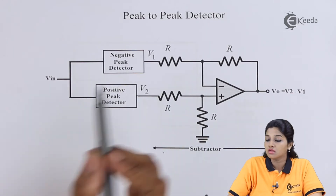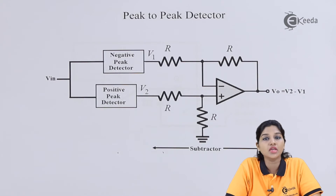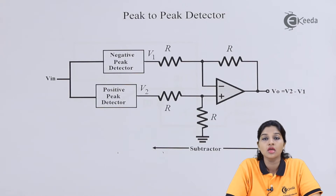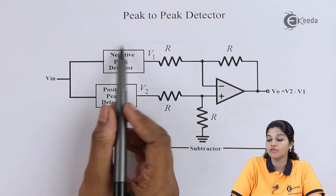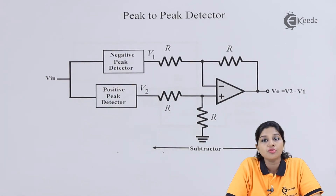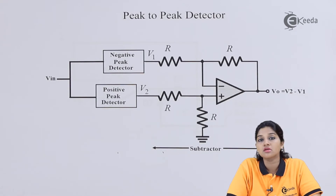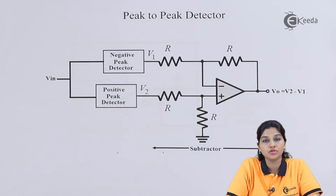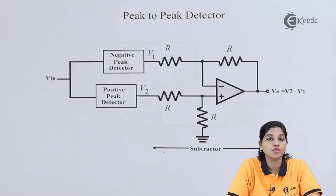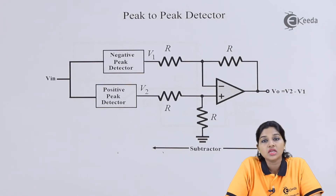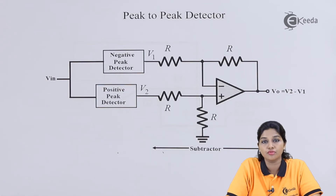Moving towards the negative peak detector: if we reverse the direction of connection of the diode in the positive peak detector, we get the circuit of a negative peak detector. In the negative peak detector circuit, the diode will conduct during the negative half cycle, so the circuit is sensitive only during the negative half cycle of the input signal. During the first negative half cycle, diode D1 becomes forward biased. The op-amp is still in voltage follower configuration providing a gain of 1, and diode D1 charges the capacitor to the maximum negative peak value of the input signal.